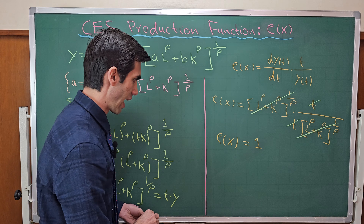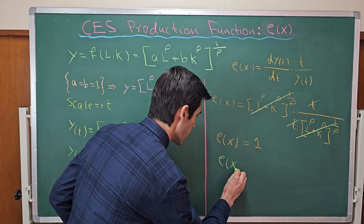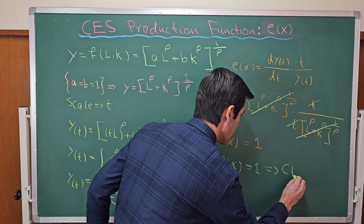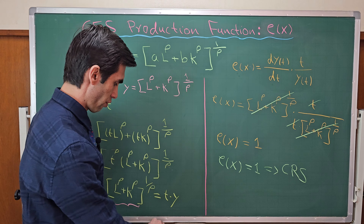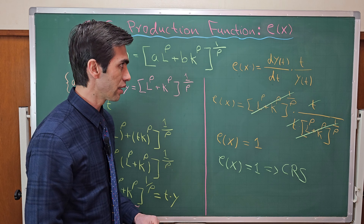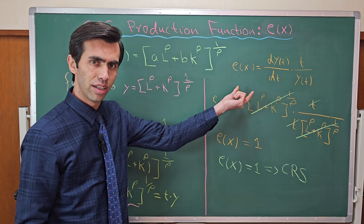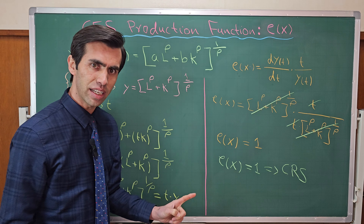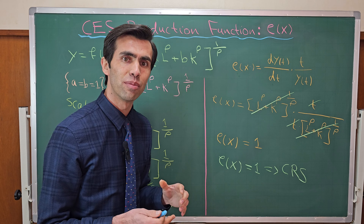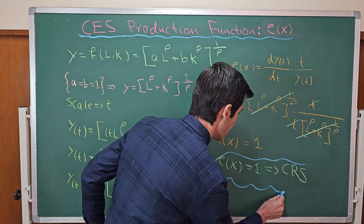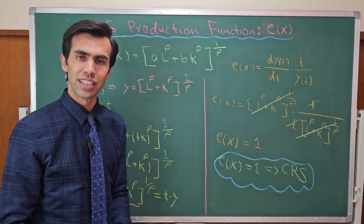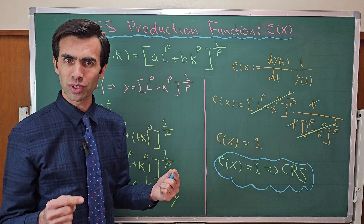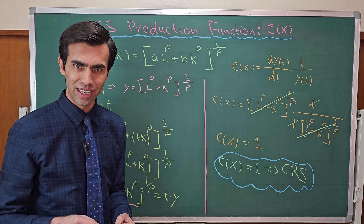We know that if elasticity of scale is equal to 1, then we have a constant return to scale production function. So we can conclude that the elasticity of scale for the CES production function is equal to 1 — it means the CES production function exhibits constant returns to scale. This is the final conclusion. Thank you so much for watching, please subscribe to my YouTube channel, like and share your comments, ask your questions, and I will try to answer as soon as possible. See you next time.